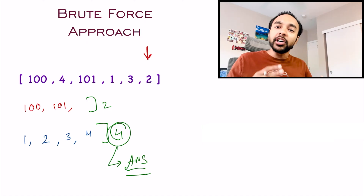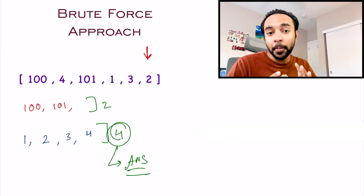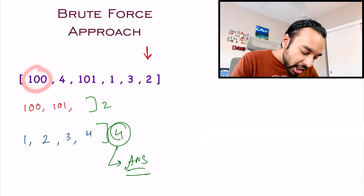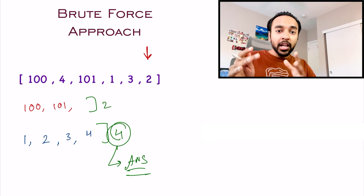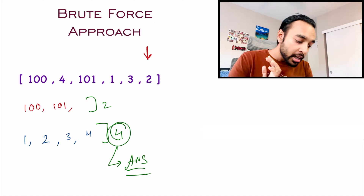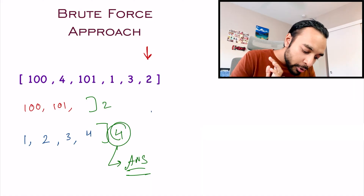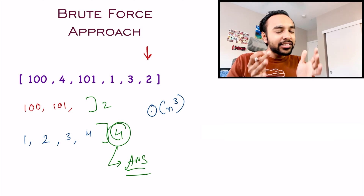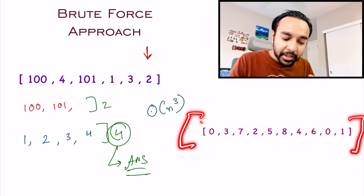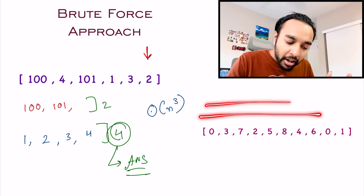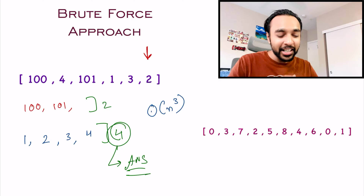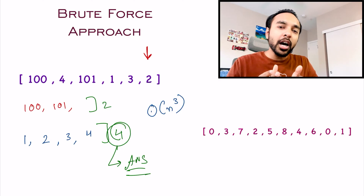This solution works and gives a correct answer every time. But the problem is that for every element, we are traversing the array again and again to find n+1, then n+2, and so on. This results in a time complexity of O(n³), which is certainly not what you want. Think about it — if you are given a huge array, you will just keep traversing it again and again, wasting a lot of time. Your interviewer won't like this solution.